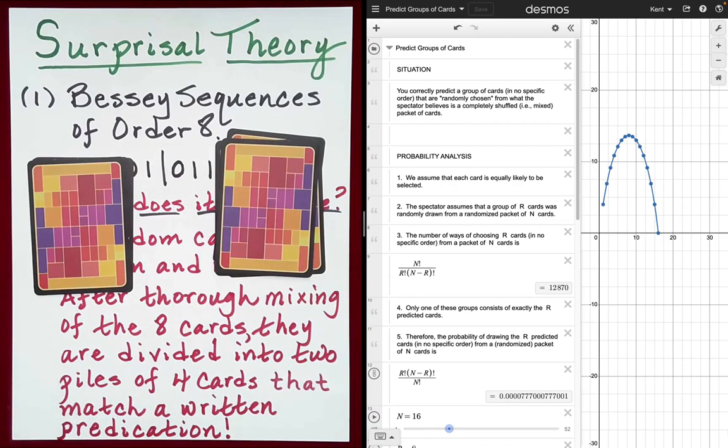So the question is, what is the surprisal associated with this particular routine? In fact, it will be the same surprisal value for any routine taking advantage of the Bessey sequence structure for a packet of eight cards. So that's what we're looking at today. What I've done here on the right is I've created a Desmos activity that will help us calculate the surprisal values for Bessey sequences and quasi-Bessey sequences. So let's go ahead and take a look at this situation.